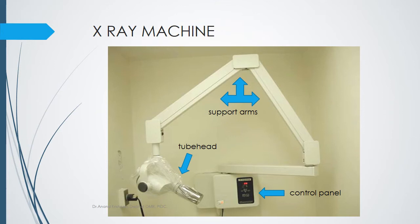This is a typical intraoral machine. It generally consists of a tube head, control panel, and support arms, supplied as either a wall mount or mobile unit. The wall mount is fixed and has a limited area of use. Our college uses a mobile unit with a vertical stand and wheels, which can be mobilized and used in multiple cubicles simultaneously.